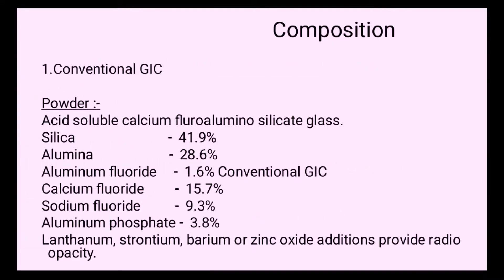Conventional glass ionomer cement is made up of powder and liquid. The powder includes acid-soluble calcium fluoro alumino silicate glass: silica 41.9%, alumina 28.6%, aluminum fluoride 1.6%, calcium fluoride 15.7%, sodium fluoride 9.3%, aluminum phosphate 3.8%. Other materials such as lanthanum, strontium, barium, or zinc oxide are added to provide radio-opacity.